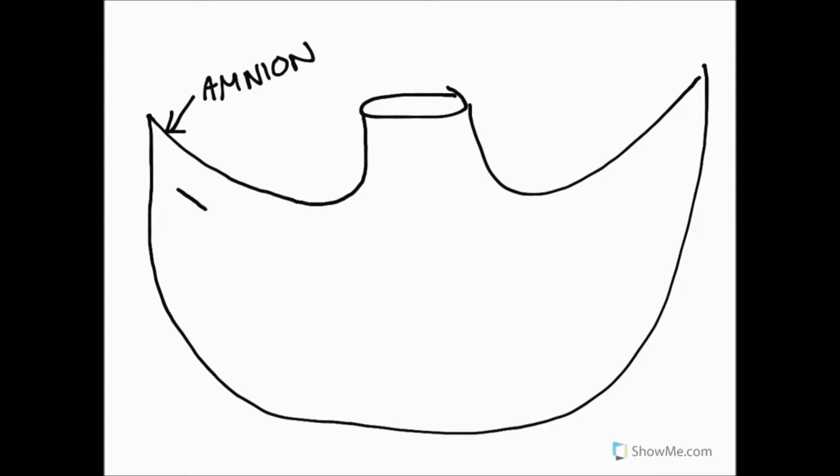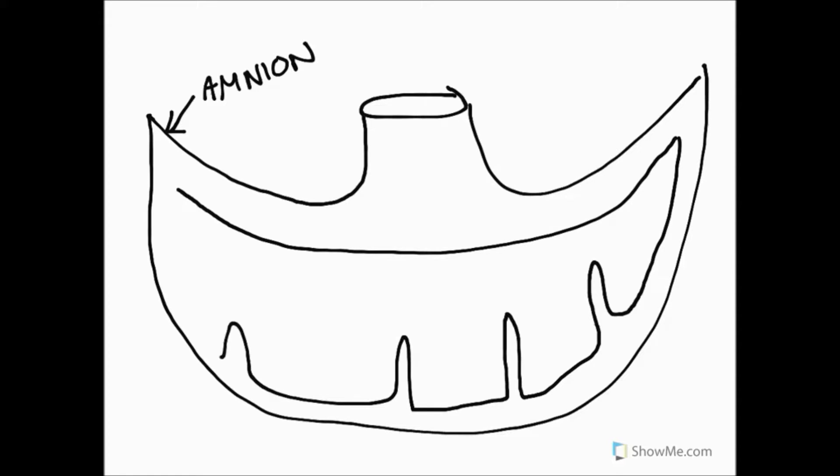Now we can draw on the chorionic plate by drawing a line around here, and we can draw the interface between mother and baby by putting on some of these placental septa, which are projections up from the mother which contain blood vessels and increase surface area. So we put a few of those on as well.